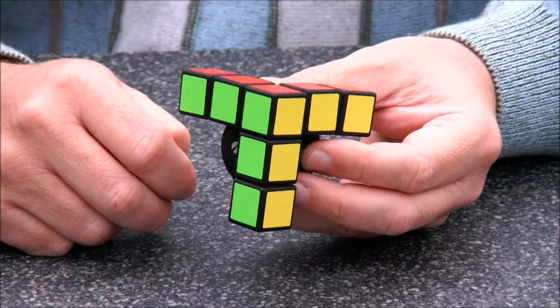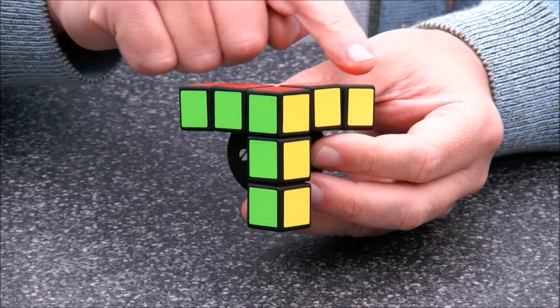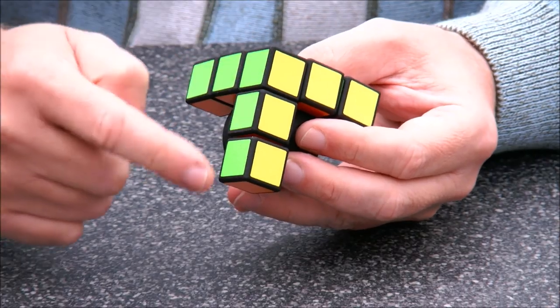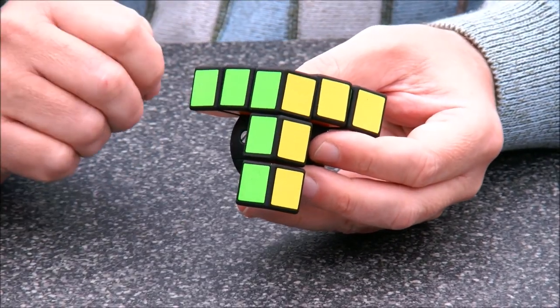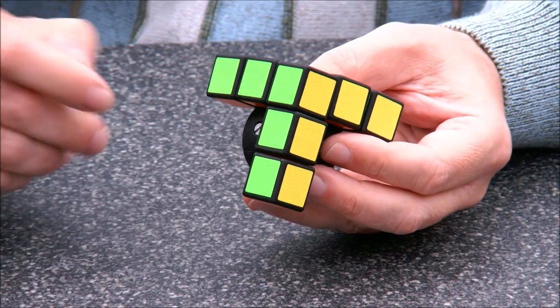The special property about his puzzle is that there is a set of cubes. One, two, three, four, five, six, seven. These seven cubes, they always stay together when turning the puzzle.